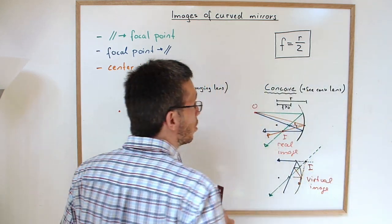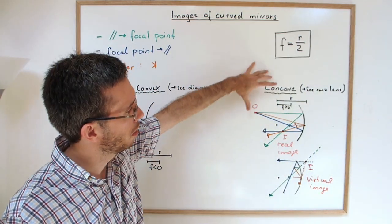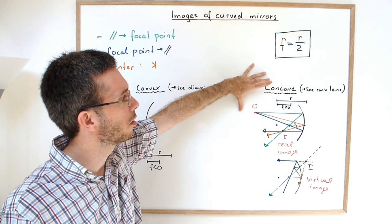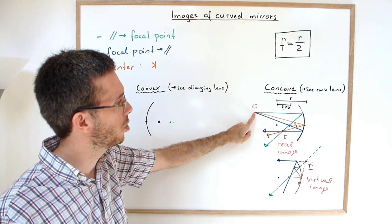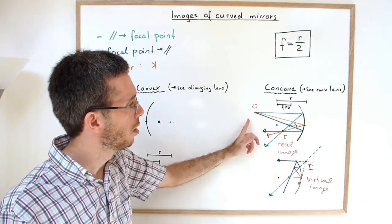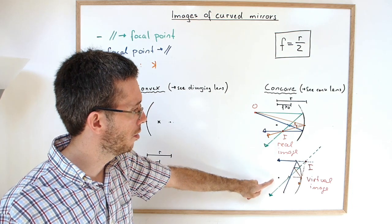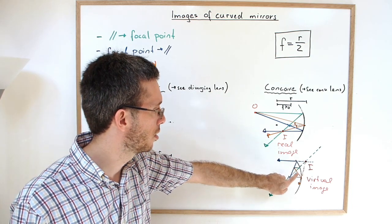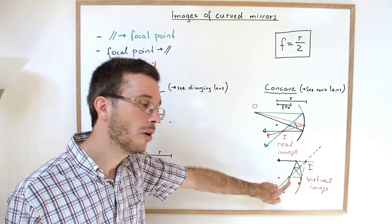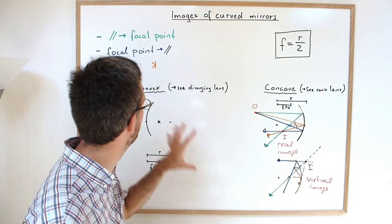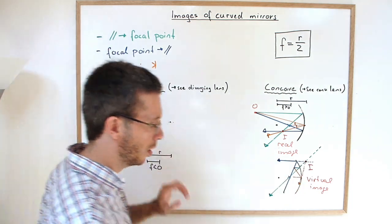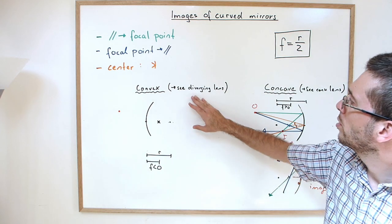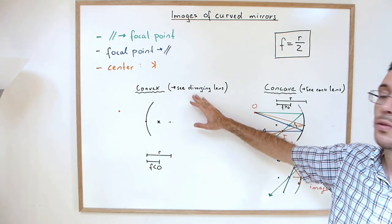Now with the concave mirror, we have figured out that it behaves like a converging lens where an object left of the focal point will produce a real image, and an object on the right of the focal point will create a virtual image. So we expect here to get similar behavior like with the diverging lens, meaning that we get a virtual image.